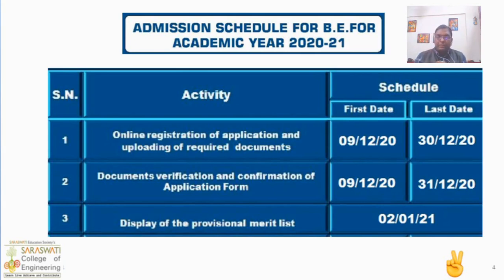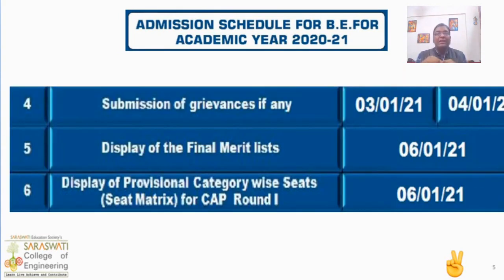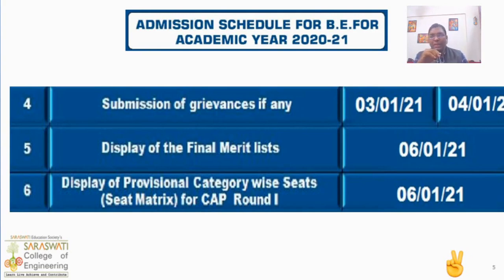The fourth activity is submission of grievances. On 3rd and 4th January 2021, students can submit any grievances. In this, you can correct your application form or submit any pending documents. So you have to carefully check your application. The next activity is the display of the final merit list on 6th January 2021. After this final merit list, there will be no changes allowed, so you have to check your application carefully before this stage.